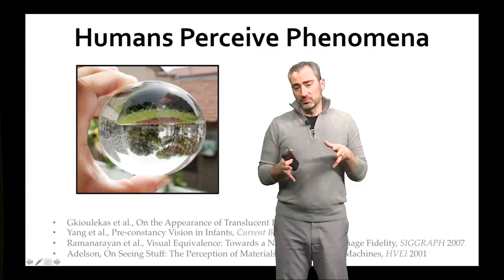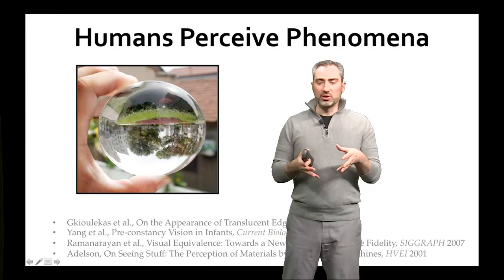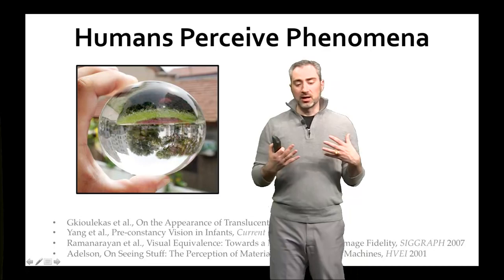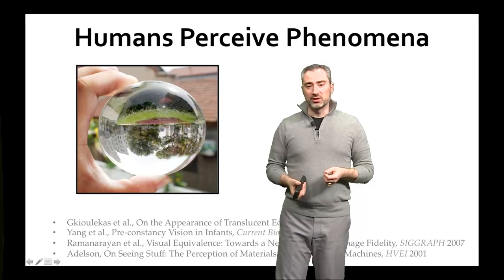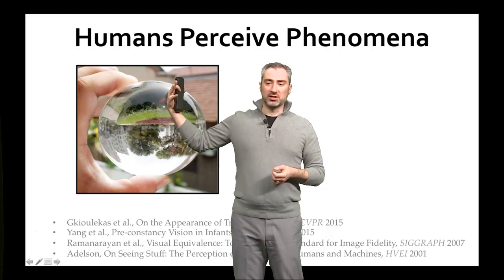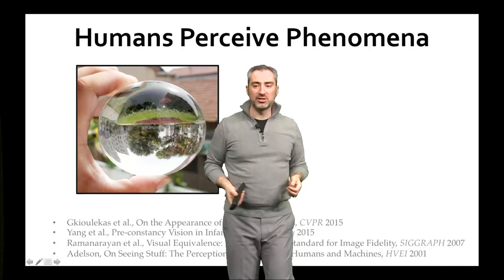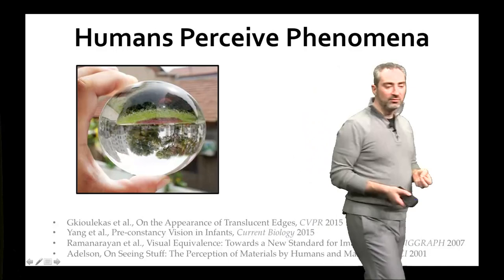What's interesting about all these effects is that, as reported in both the computer graphics and the perceptual literature, humans don't really perceive the radiometric qualities. Instead, what we perceive are overall phenomena, which are mostly driven by the geometry of what we're seeing and by the frequency content. For example, in the case of this refracting sphere, you perceive it as a glass sphere because the shape of the distortion matches the overall surface shape and there's high-frequency sharp content.